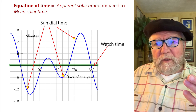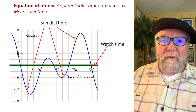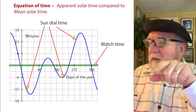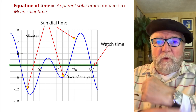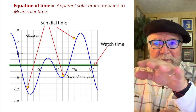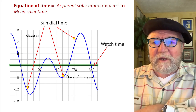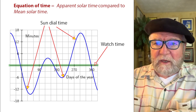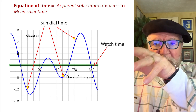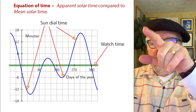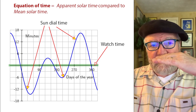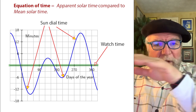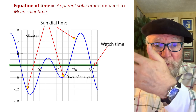What you end up with is a mean. Here's a chart with the equation of time — the apparent solar time compared to the mean solar time. The green line that goes through the middle of the chart is your watch time. Over a period of 365 days in a year, going from left to right on the chart, you'll see the blue curve, which shows what the sundial time is. Watch time is really the mean of all those different positions — you add them up and divide by the number, and you get a mean. That's what mean time is.